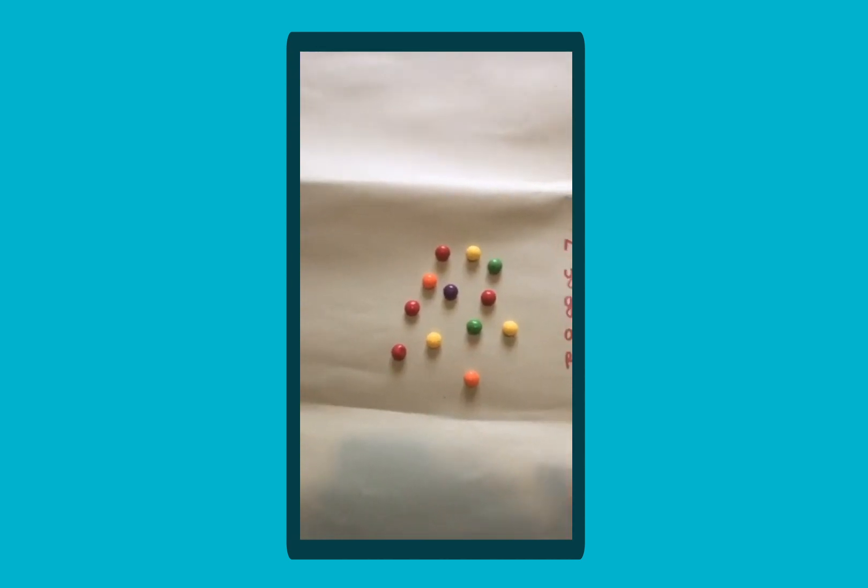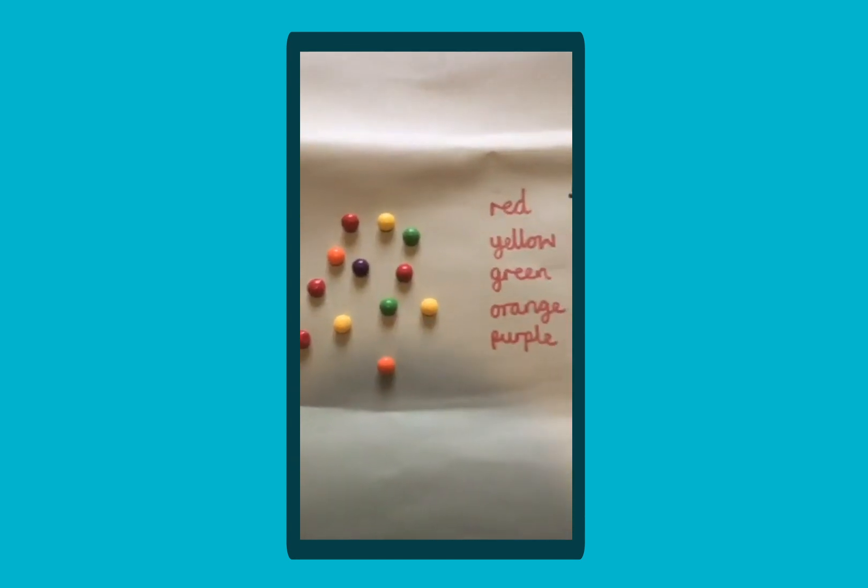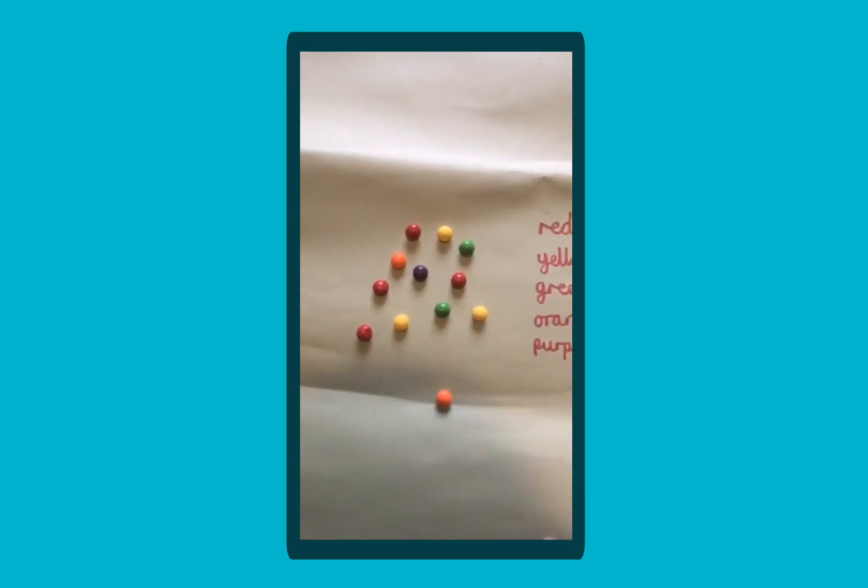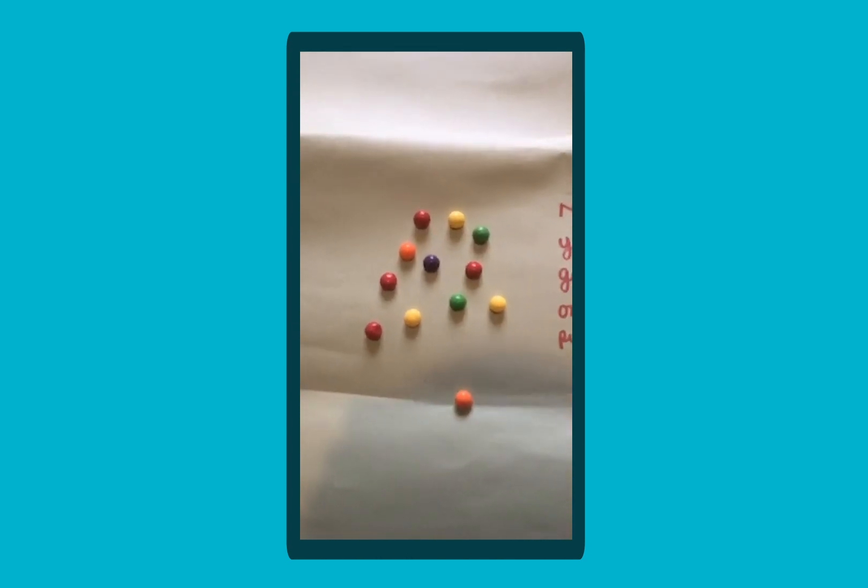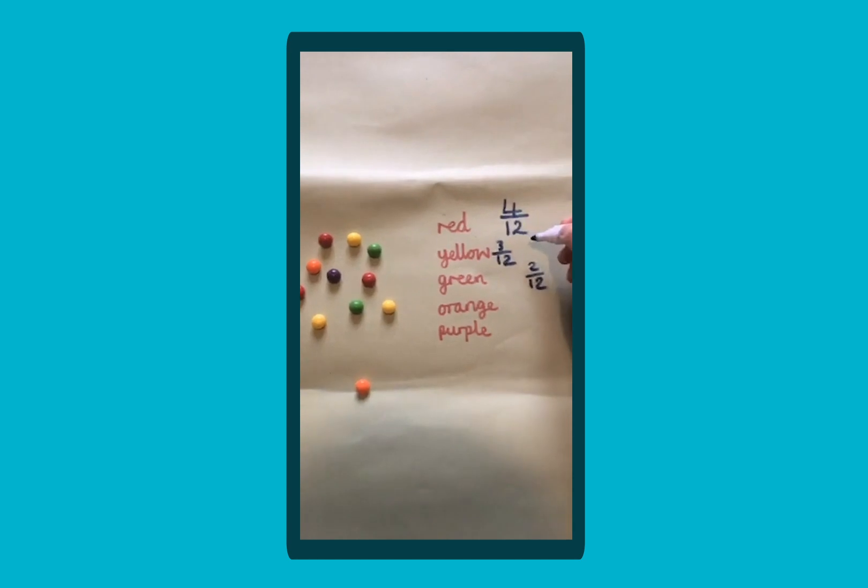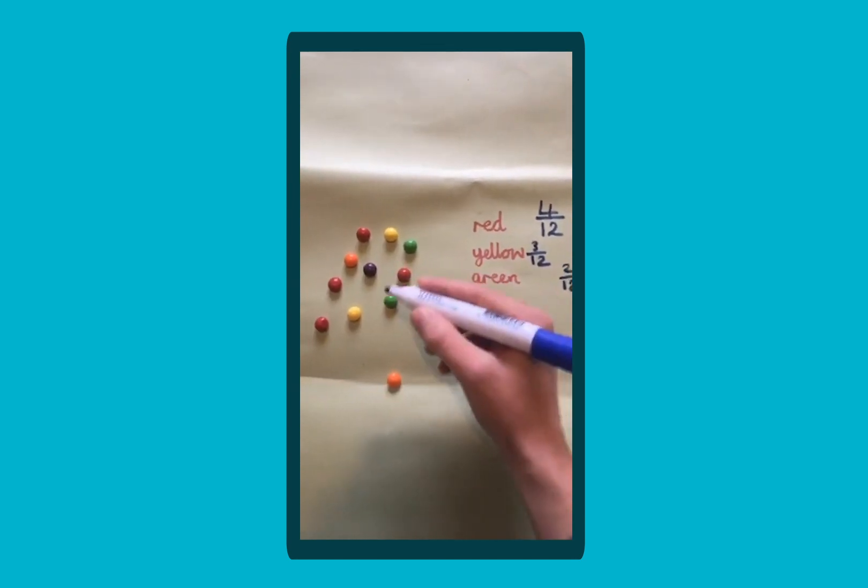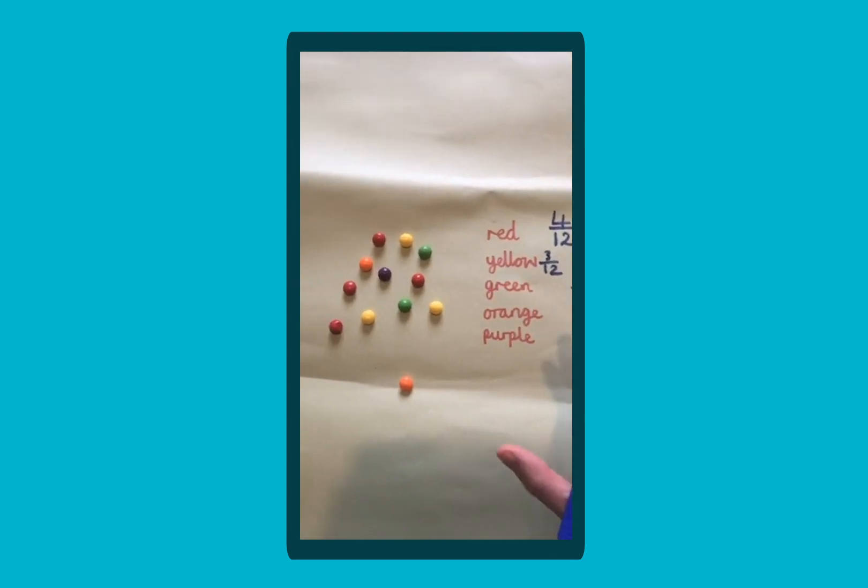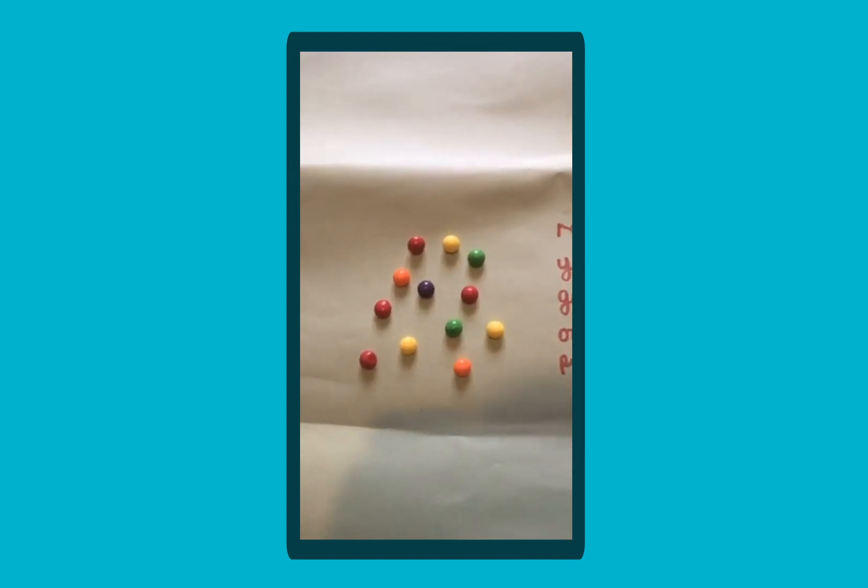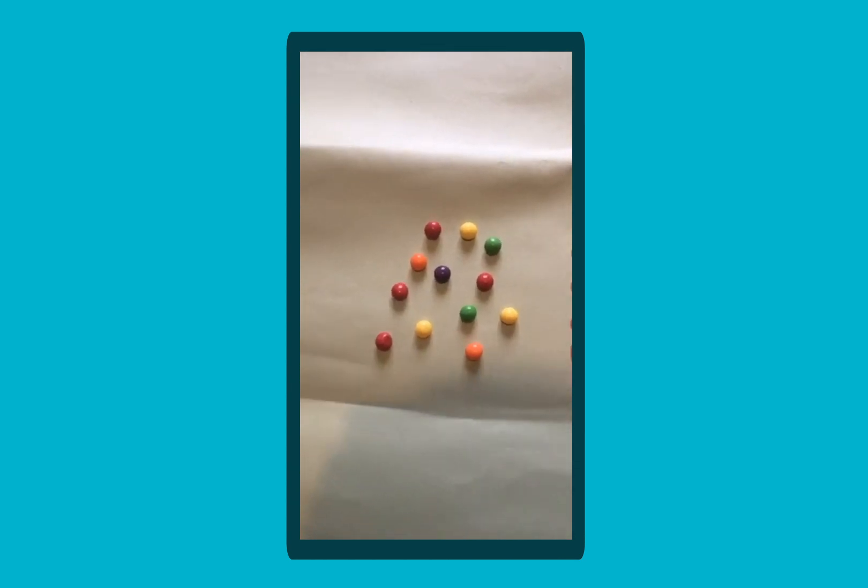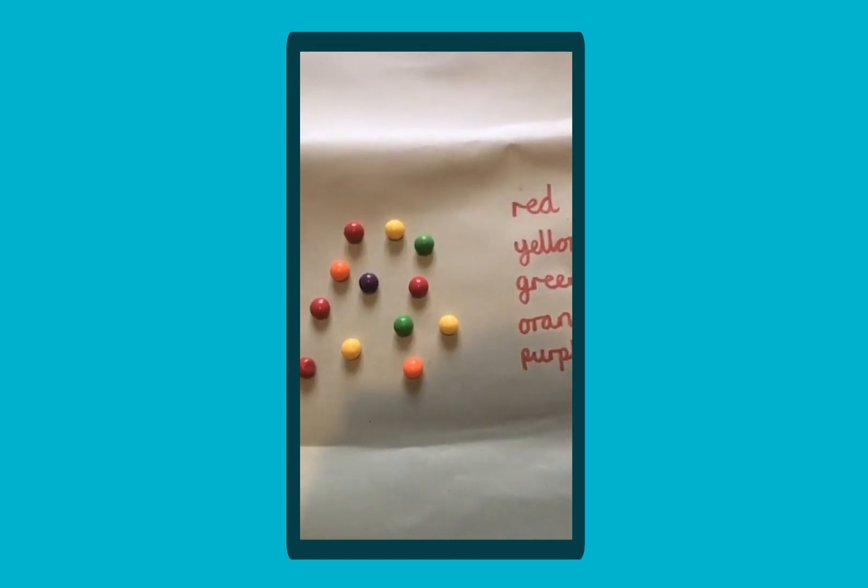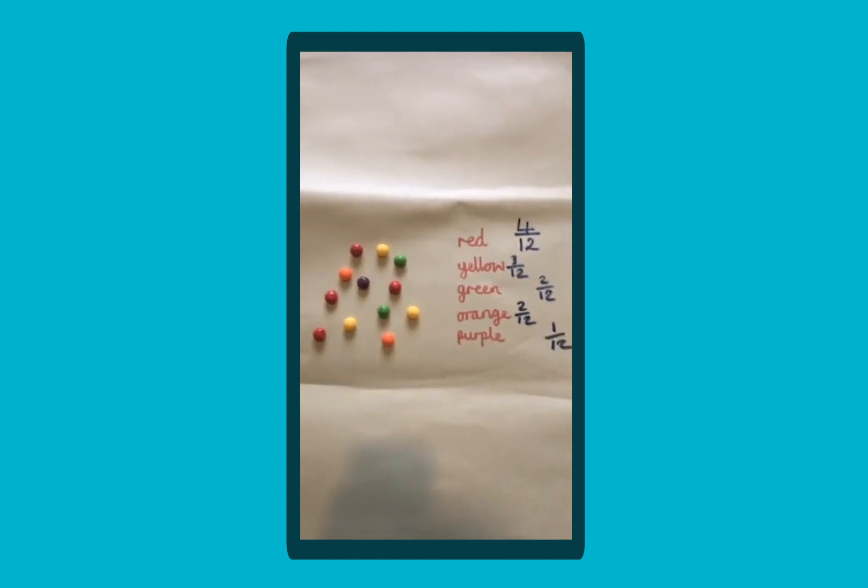You do the same for the yellow, so we have three twelfths there, and it's not the best green, we have two twelfths, all out of 12 because there's only 12 sweets, it never changes, the whole stays the same. Orange, we have two twelfths, and for purple, just a lonely one, one out of 12, one twelfth.